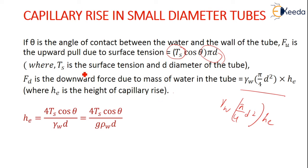So what is h_c? h_c is the height of the capillary rise. After simplification we get h_c equals 4T_s cos θ by γ_w d. It can also be written as 4T_s cos θ by g ρ_w d because γ_w can also be written as g into ρ_w.